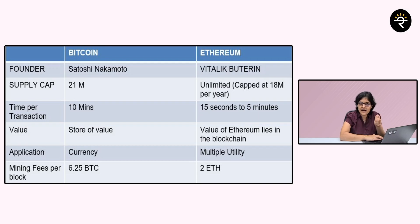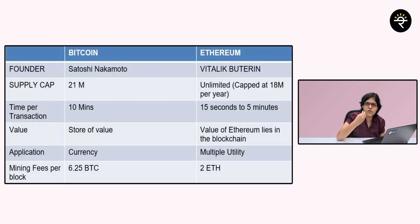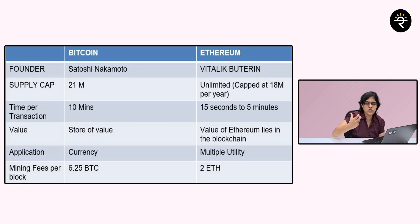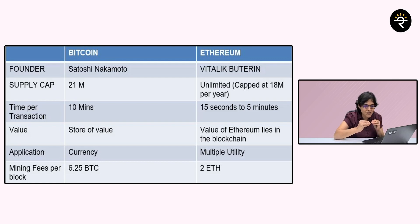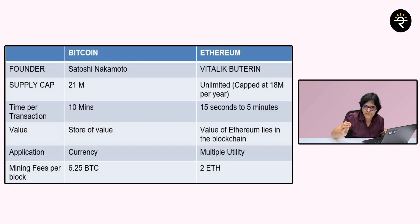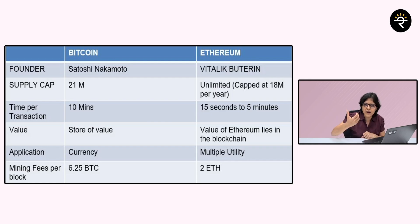Let's understand this distinction using a few points. Who is the founder of Bitcoin? Technically speaking, anonymous, but people use the name of Mr. Satoshi Nakamoto. Ethereum has many co-founders, but one of the co-founders is Vitalik Buterin, who is pretty famous. Second, if I'm talking about supply — is there any limitation on supply? Yes. Bitcoin maximum supply is 21 million Bitcoins. For Ethereum, it's an unlimited supply, but the maximum new Ether that can enter into the market is capped at 18 million per year. Next one is transaction time. How much transaction time is required on a Bitcoin blockchain? It's roughly 10 minutes per transaction. But on the Ethereum blockchain, one transaction can be executed in barely 15 seconds.